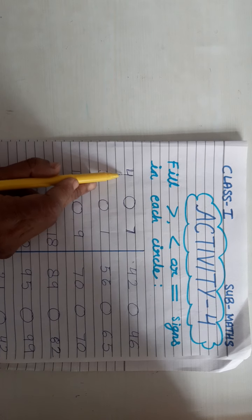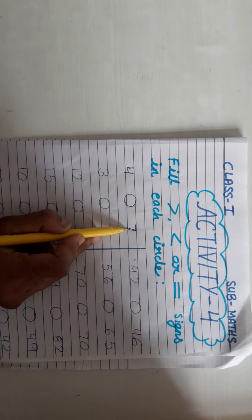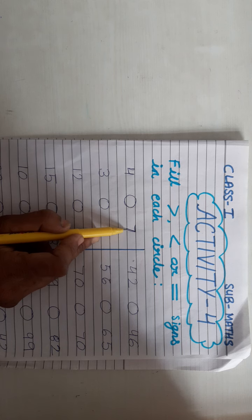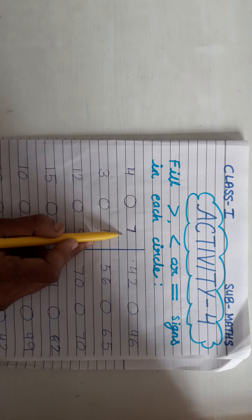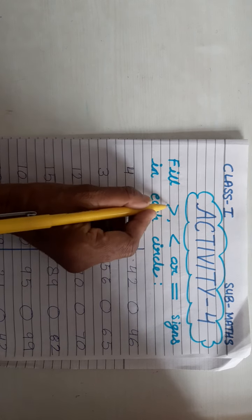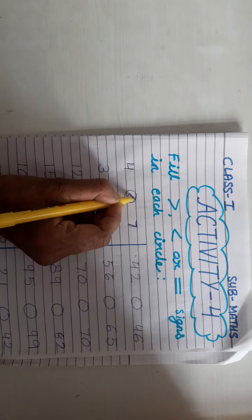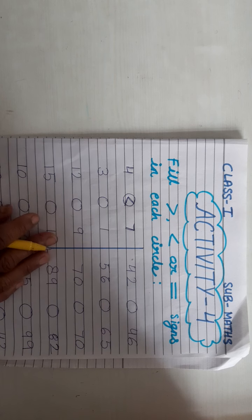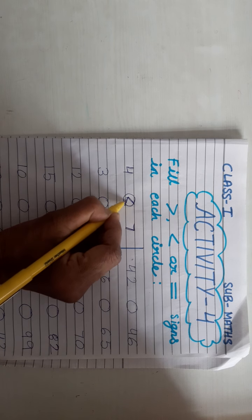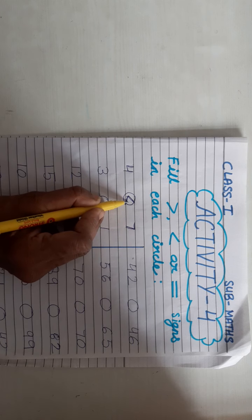Now, this is the number. This is 4 and this is 7. Now we can see which number is larger? 7 is the larger number. So we will move to which side — 7 is greater. We will open the sign towards 7, like this.